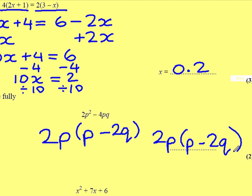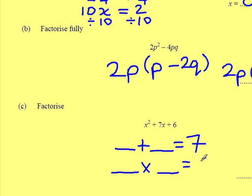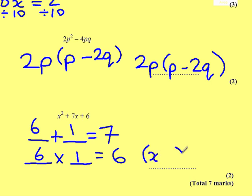Part C: factorise x squared plus 7x plus 6. I'm looking for a pair of numbers that, when added, give me 7 and when multiplied, give me 6. The only numbers that will do that are 6 and 1. So, in factorised form, two brackets: x plus 1 and x plus 6.